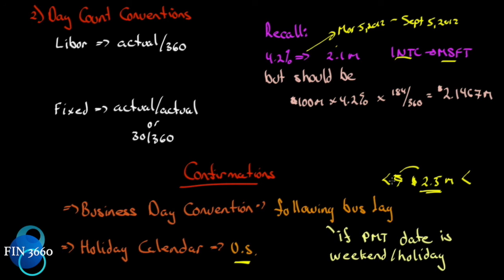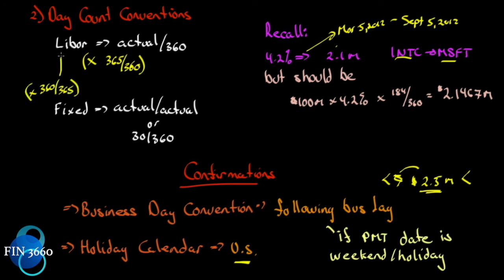If we want to convert LIBOR into a fixed rate, we can multiply by 365/360. If we're going the other way from fixed to LIBOR, we multiply by 360/365 — nice easy corrections depending on which direction you want to take the rate.